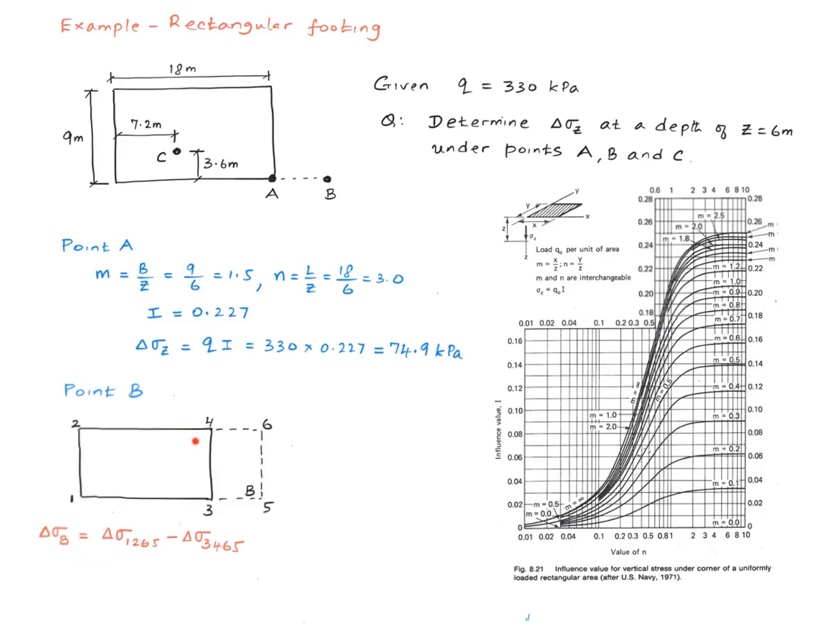Coming back to this little picture here, we see that the area of the footing is obtained by subtracting this little rectangle from this long rectangle, right? And point B happens to be at the corner for both of these rectangles, for this little rectangle and for this long rectangle. So we go ahead and calculate the change in stress corresponding to each of these rectangles.